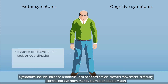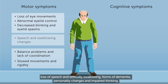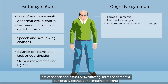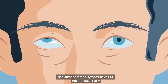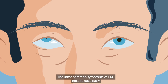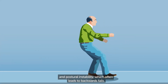Symptoms include balance problems, lack of coordination, slowed movement, difficulty controlling eye movements, blurred or double vision, loss of speech and difficulty swallowing, forms of dementia, personality changes and impaired thinking. The most common symptoms of PSP include gaze palsy and postural instability, which often leads to backwards falls.